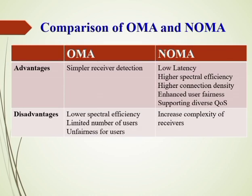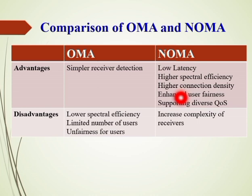Comparing NOMA and OMA: the advantage of OMA is simpler receiver detection. The advantages of NOMA include low latency, higher spectral efficiency, higher connection density, enhanced user fairness, and support for diverse quality of service. The disadvantages of OMA include lower spectral efficiency, a limited number of users, and unfairness for users. The disadvantage of NOMA is increased complexity of the receiver.